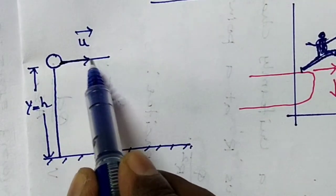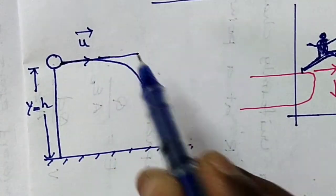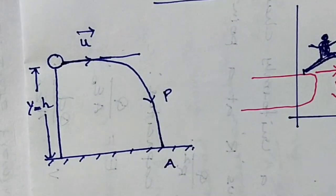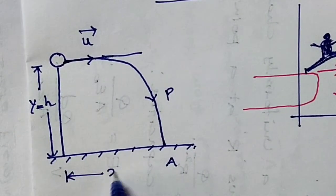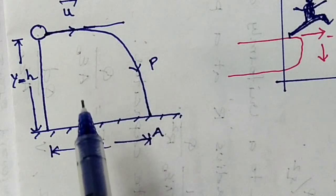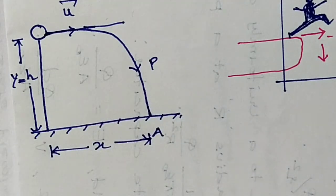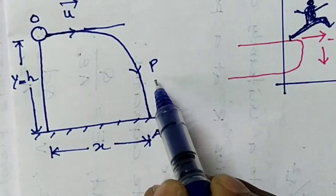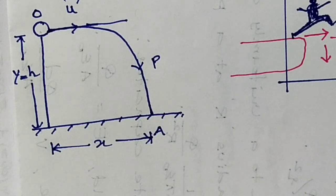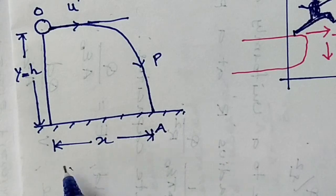The ball moves in the horizontal direction and then in the vertical direction until it reaches the ground. The horizontal distance is x and the ball covers it due to uniform horizontal velocity u. Under the combined effect of horizontal velocity and gravity, the ball moves along the path O-P-A, which is called the trajectory — a motion in a two-dimensional plane with x-axis and y-axis.